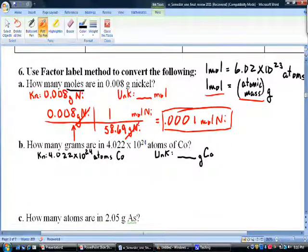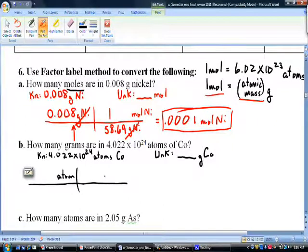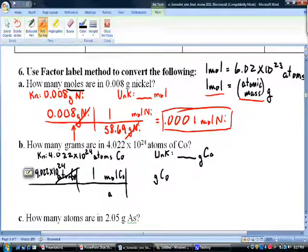We may have to use both of the unit multipliers because we can't convert directly from atoms to grams. We have to go from the atoms that we start with, convert that to moles, and then convert the moles to grams.